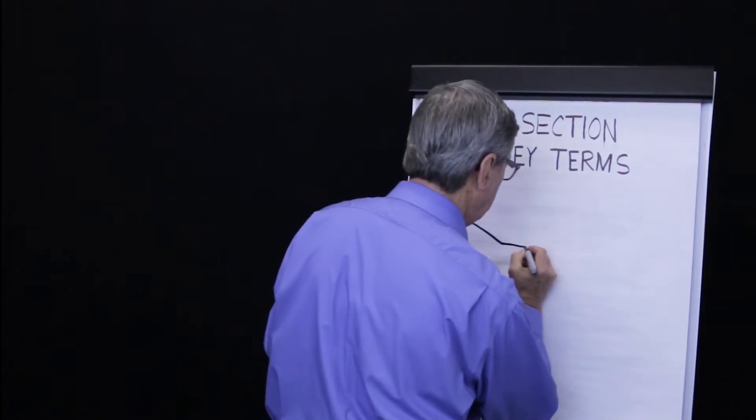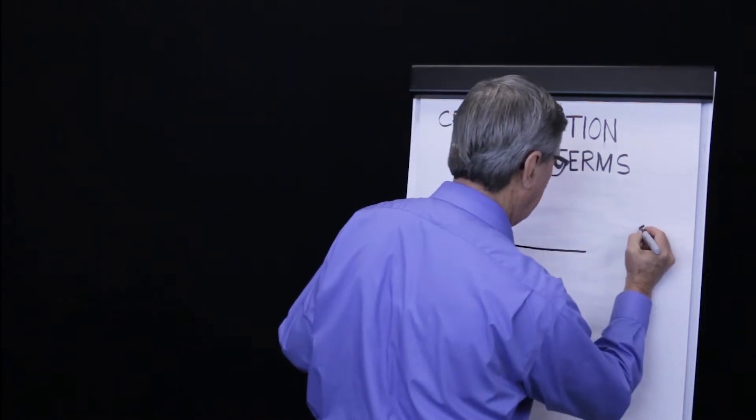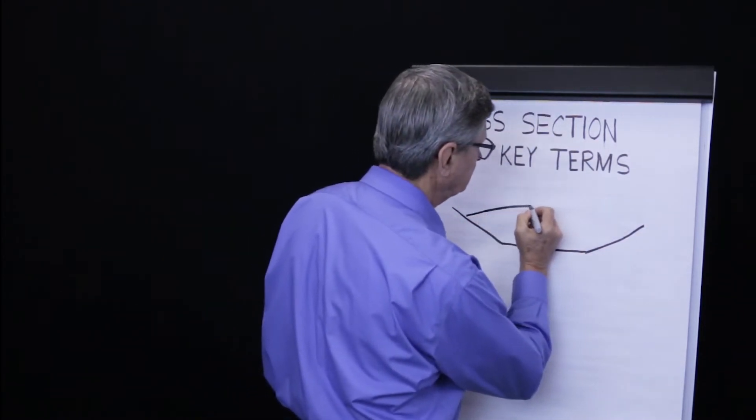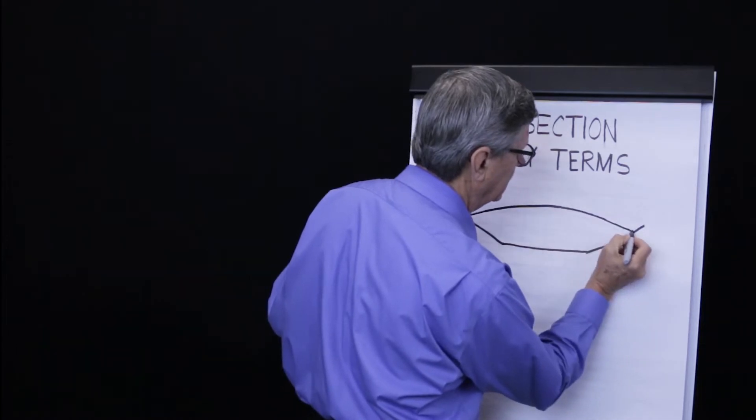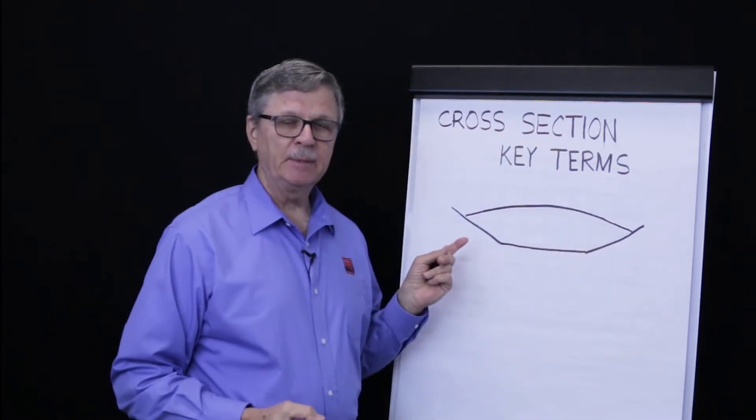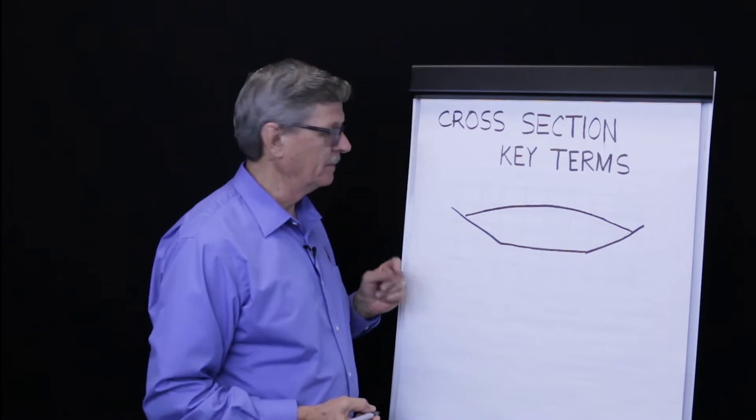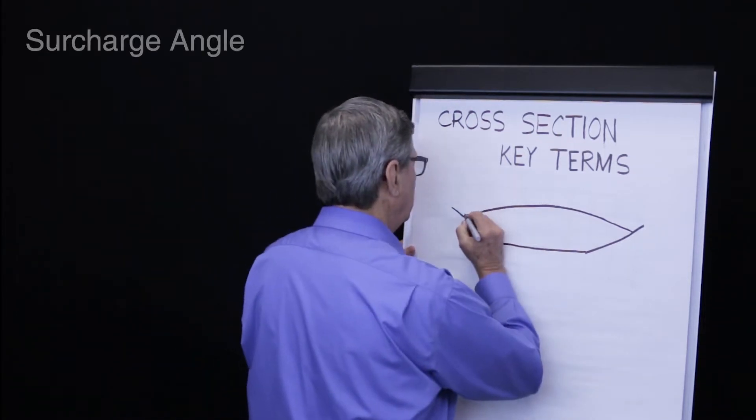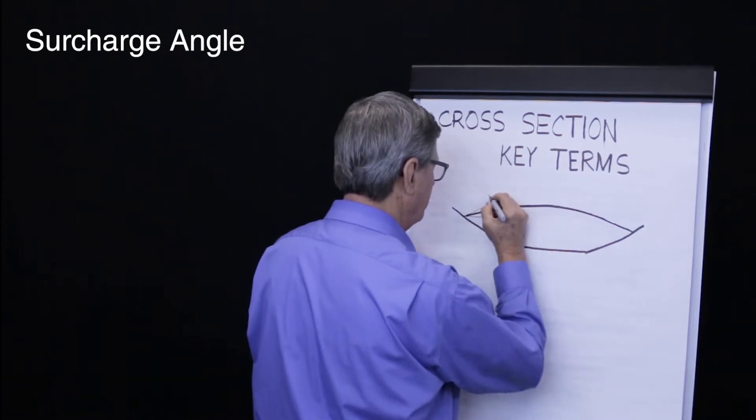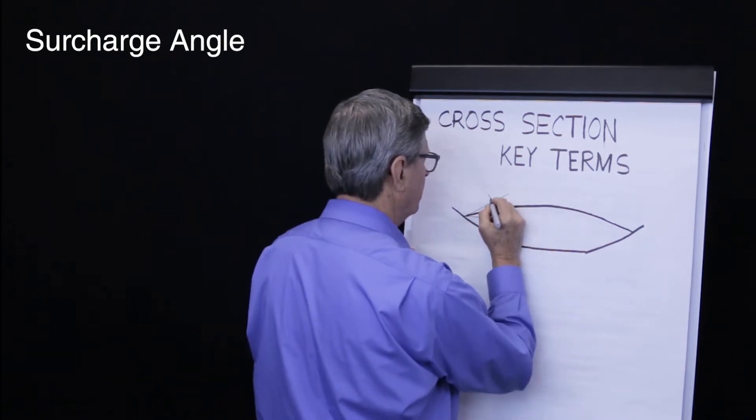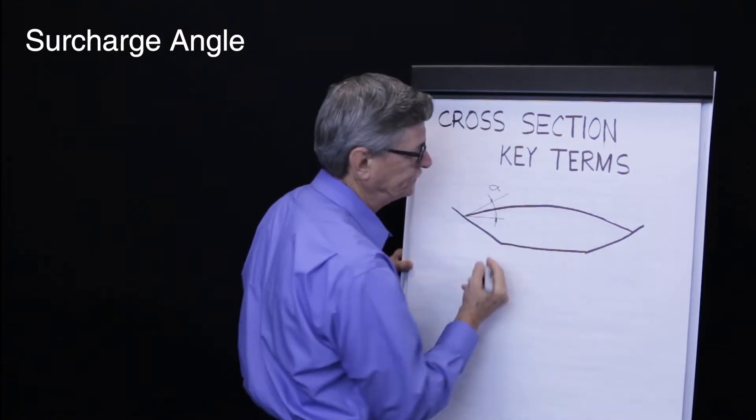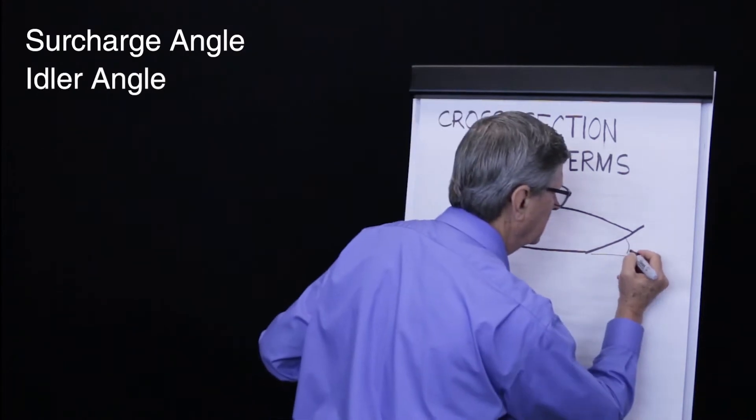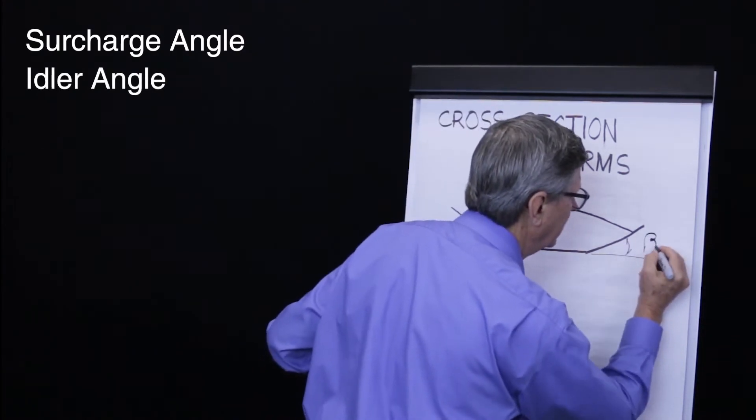Here we will be looking at a 35 degree troughing idler with material in it according to the CEMA recommended maximum fill factor. What are our terms? We look at material surcharge angle, which is called alpha. We look at the idler angle, which we call beta.